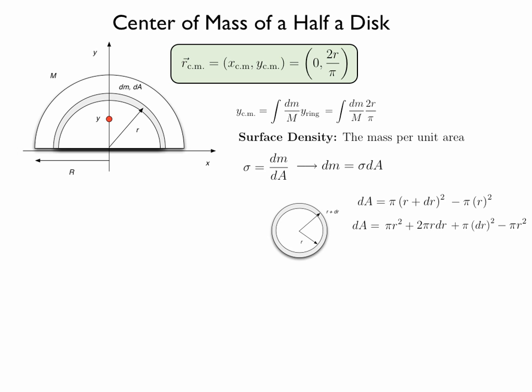We cancel the pi r squared terms, and of the two remaining terms we know that the dr squared term is much smaller than the 2 pi r dr term and so we neglect it. The area of a ring then is simply equal to 2 pi r dr.